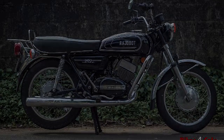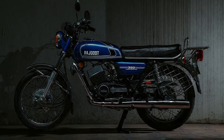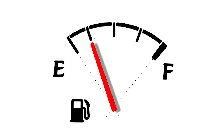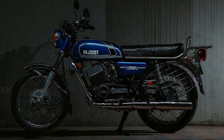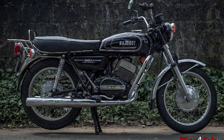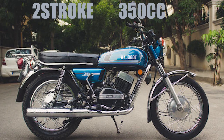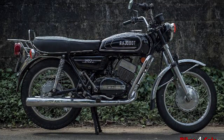Rajdoot 350 — I want to talk about 80s kids and 90s kids. In this video, we have models produced in 1983 and 1987. There are two different variants: high torque and low torque. I want to talk about high torque and mileage, low torque, initial pickup — all related to the Rajdoot 350.